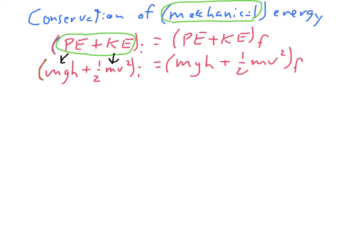As far as the units go, that's pretty simple. Potential energy is measured in joules, kinetic energy is measured in joules. Same thing for the after part. So the units for all this is just joules. Let's take a look at an example.